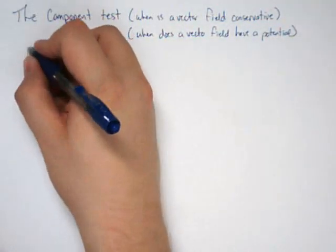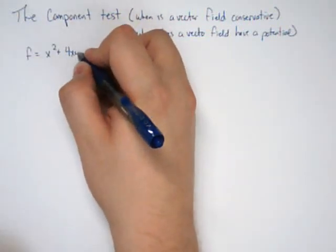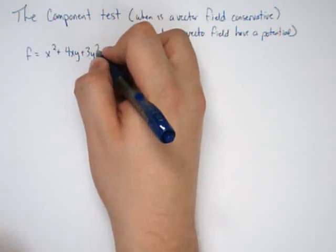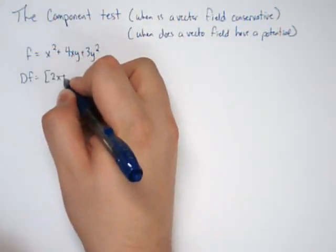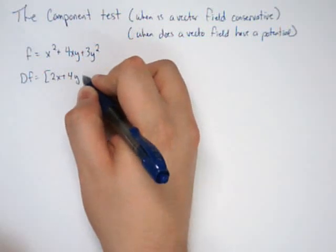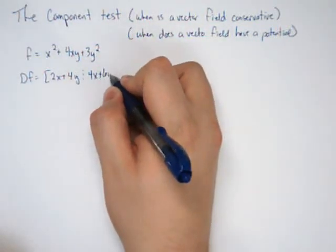The idea in the last screencast, we took something like f is x squared plus 4xy plus 3y squared. We took the derivative of the function and we got 2x plus 4y, and then we got 4x plus 6y.